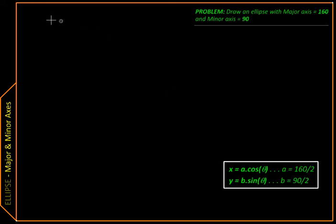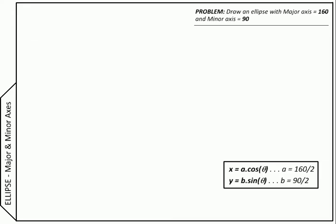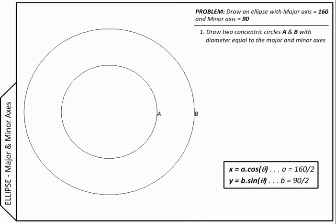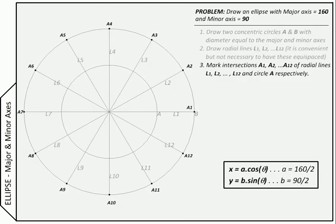Let us just recap this quickly. So we are going to start with two concentric circles with diameters equal to major and minor axis. Draw arbitrary radial lines. Mark their intersections with the outer circle. Mark their intersection with the inner circle.